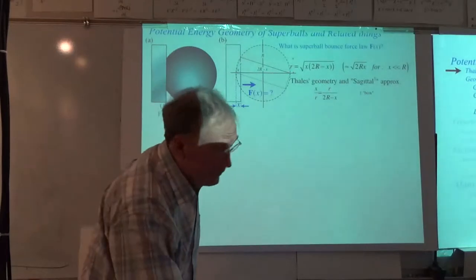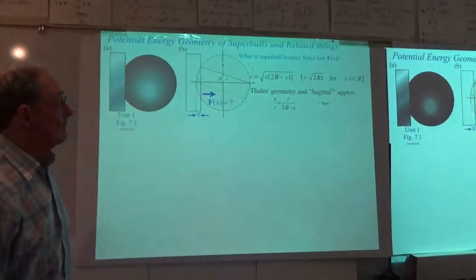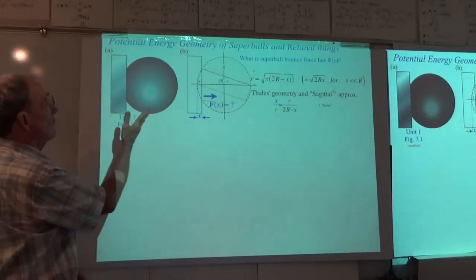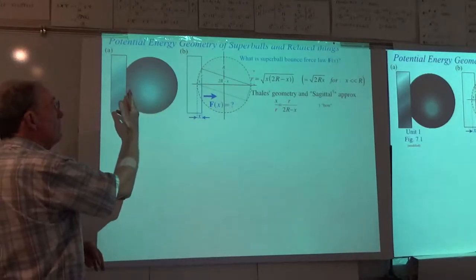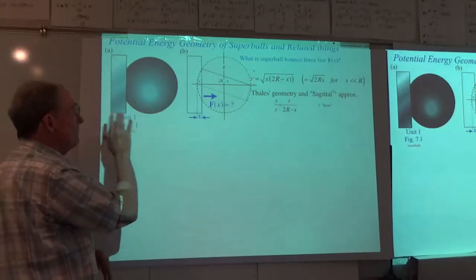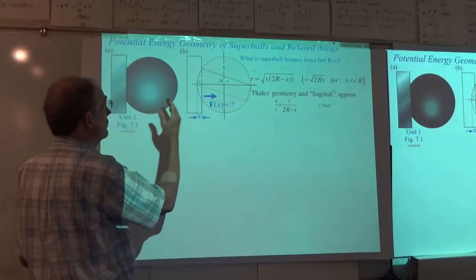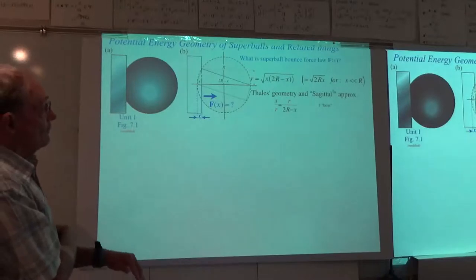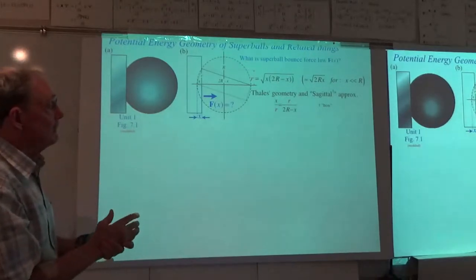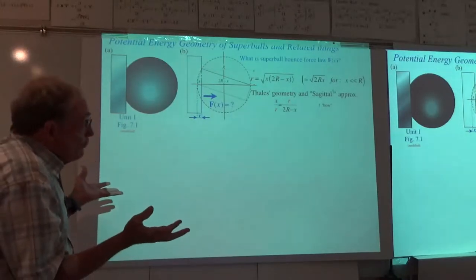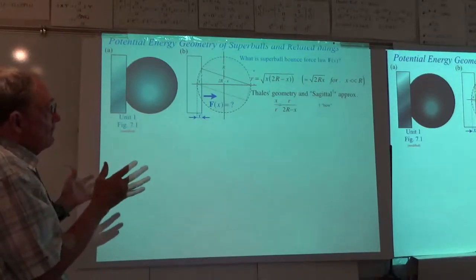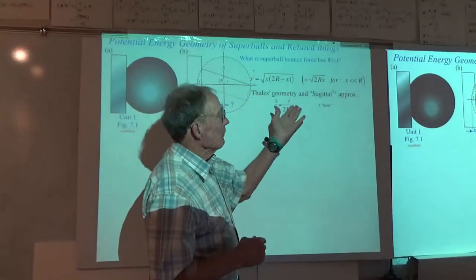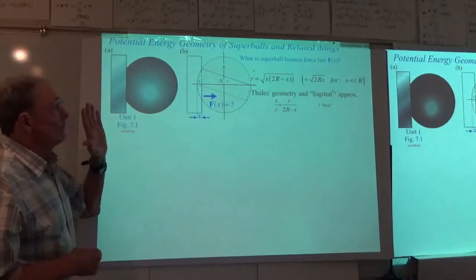Let's get started with the Thales geometry. We're going to think about what kind of potential and force you get when a ball — just one ball — comes with enough speed to make a flat on the ball with a distance x. What is the function of x? That would be the V of x and F of x that you experience with the Super Balls ultimately. We're going to use something called the sagittal theorem or approximation that you use in spherical lens optics.